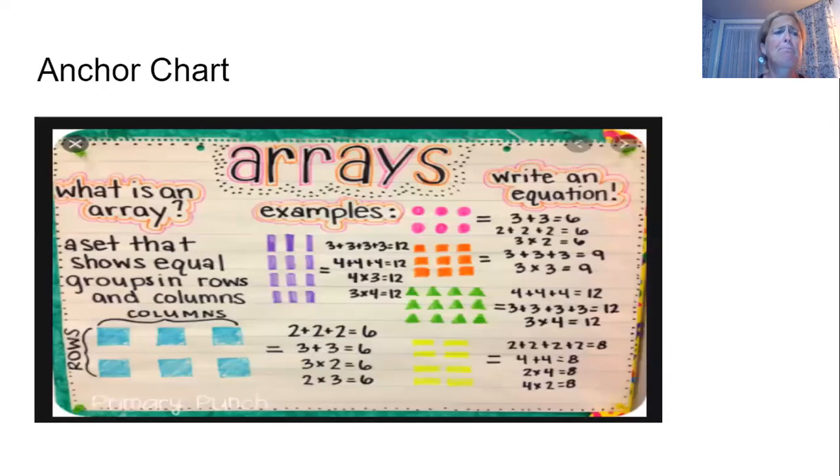All right, now this anchor chart is just a review of what an array is. An array is a set that shows equal groups in rows and columns. One thing I am noticing in your work that I've seen so far, some of you are forgetting that the groups need to be equal groups. So if you have three in one row, you have to have three in all the rows. It can't be three in one, four in another. They have to be equal rows. They also have to be equal columns. So please make sure that when you're drawing your arrays that you are making sure they're even and they all are equal groups.